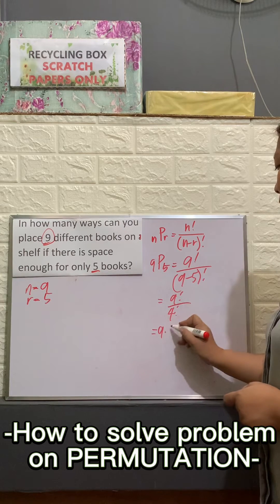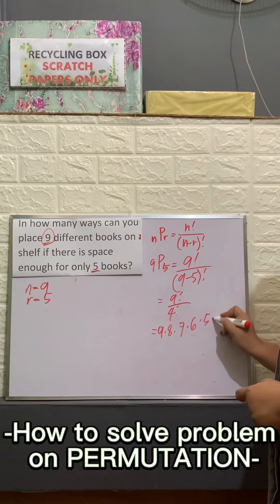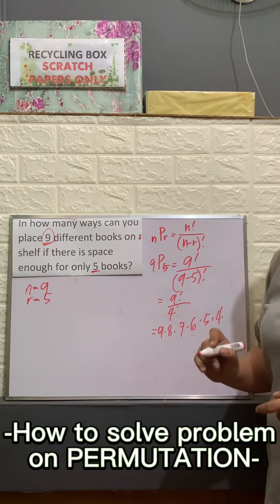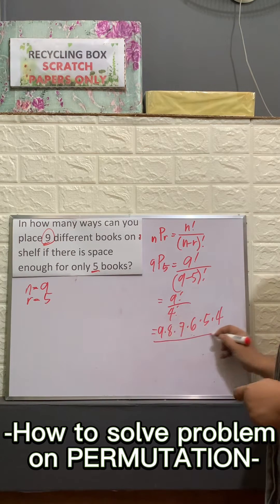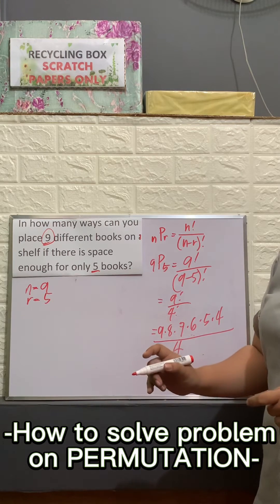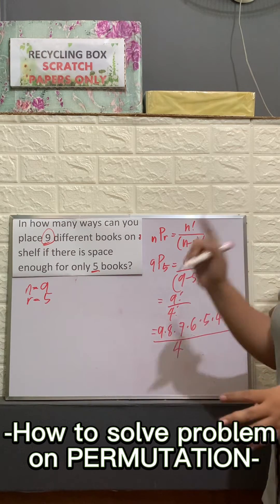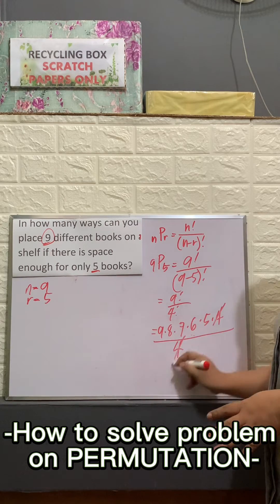You will have 9 times 8 times 7 times 6 times 5 times 4. As a shortcut, we stop at 4 because our denominator is 4. We do not need to enumerate 4 times 3 times 2 times 1. So we cancelled 4.